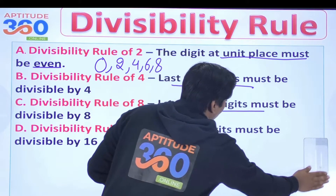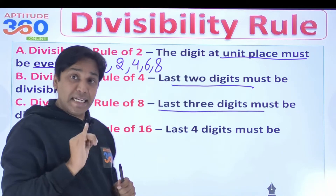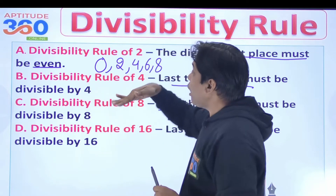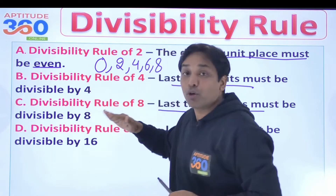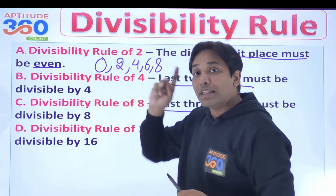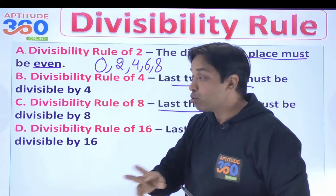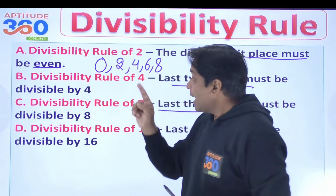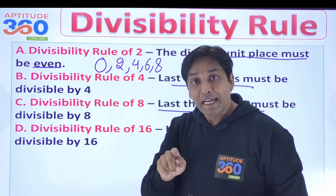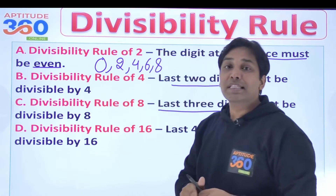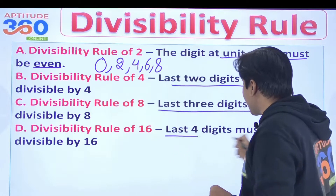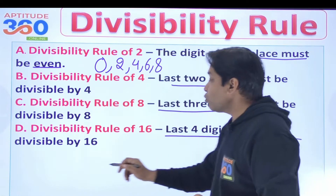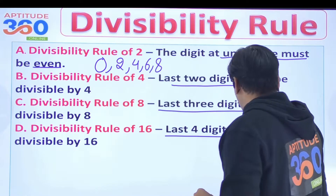For any number, for divisibility by 8, you just need to check the last 3 digits. You might be getting a pattern: for 2, the last digit must be divisible by 2; for 4, the last 2 digits must be divisible by 4; for 8, the last 3 digits must be divisible by 8. So what should the rule of 16 be? The last 4 digits must be divisible by 16.